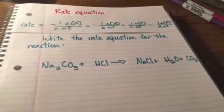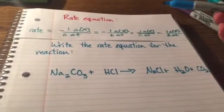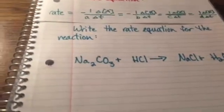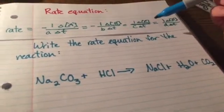Write the rate equation for the reaction. We can recall that our rate equation is this, where our reactant side are negative and our product side are positive.